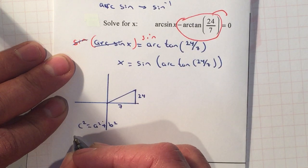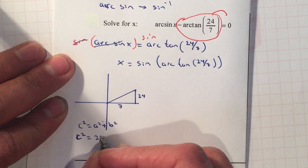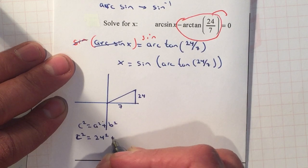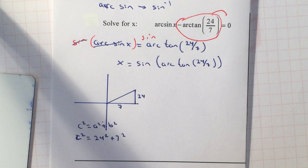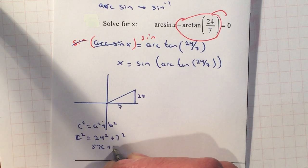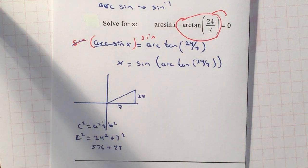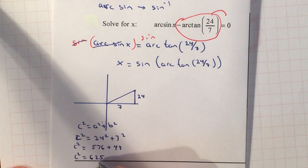C squared is what we're looking for: 24 squared plus 7 squared. Your numbers on the test will be smaller, but in this case, it's 576 plus 49, which is 625. Therefore, C equals 25.